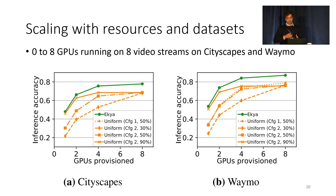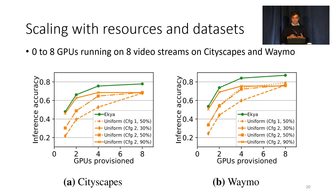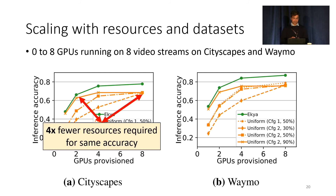Similar trends are seen across datasets when testing IKEA with varying resource counts for a fixed number of video streams. When fewer resources are provisioned, IKEA identifies that retraining is not feasible and focuses on running just inference jobs. As more resources are provisioned, IKEA starts allocating more resources to retraining and achieves higher accuracy. Notably, IKEA takes 4x fewer resources to achieve the same accuracy as a fair scheduler.